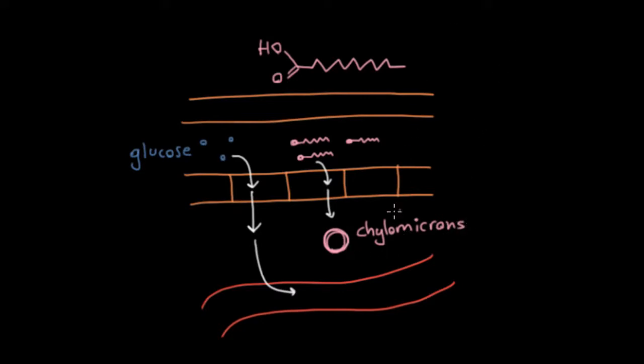And these chylomicrons are useful for holding a lot of these fats together. But they have a problem, which is that chylomicrons, as you might guess, are too big to diffuse into the capillaries. So they can't do that. But you don't want to have chylomicrons just accumulating here in your intestine. You want to spread them out to the body where they're needed.